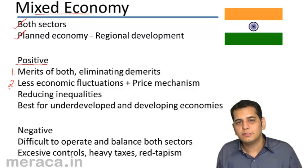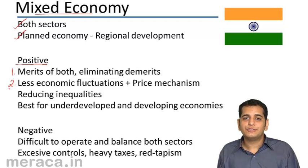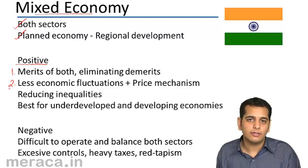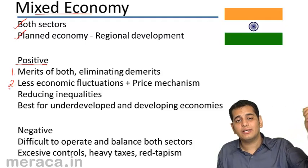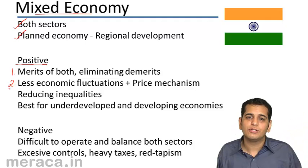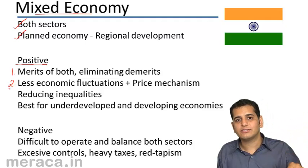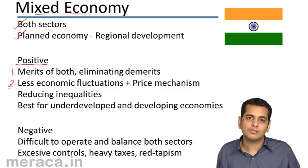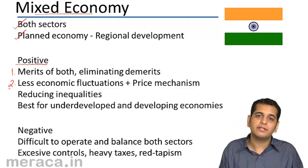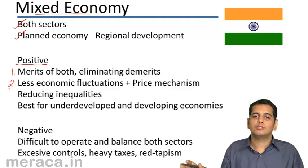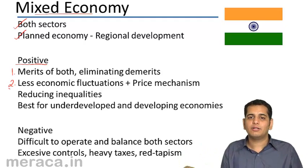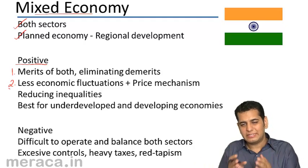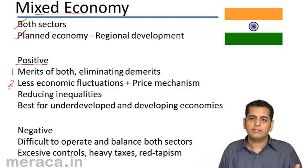For example, lack of competition is a demerit in a socialist economy, but it is an advantage in a capitalist economy. So when a mixed economy takes the advantage of the capitalist economy, it eliminates the demerit of the socialist economy. When it takes the advantages of both economies, the demerits automatically get eliminated.